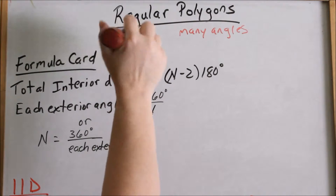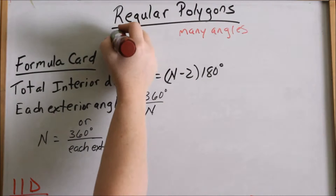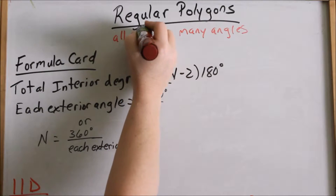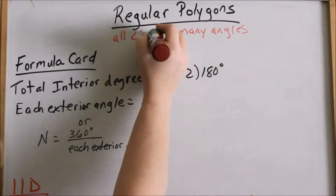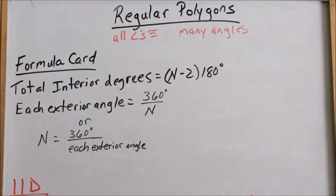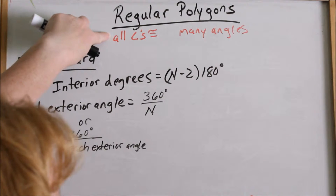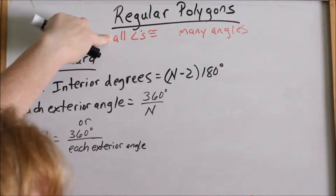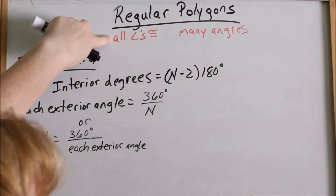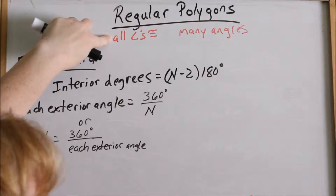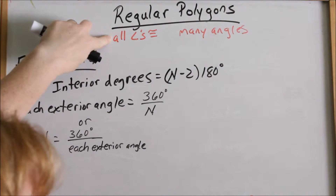Regular means that all the angles are congruent — so all angles are congruent. When we talk about regular polygons, if we're talking about a hexagon, all the angles in that polygon are congruent.